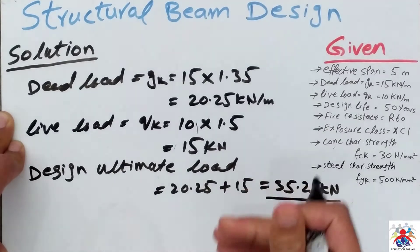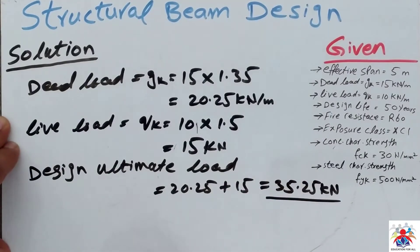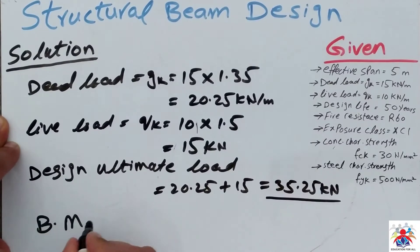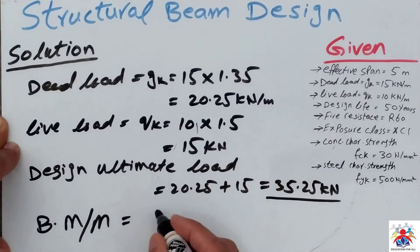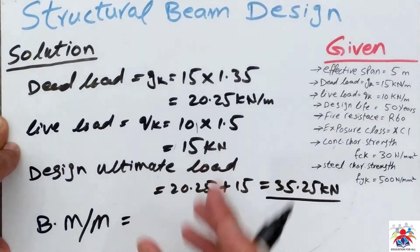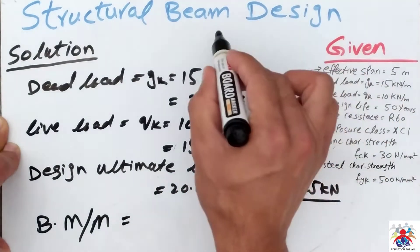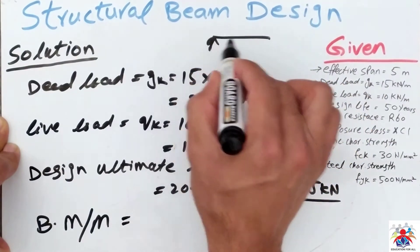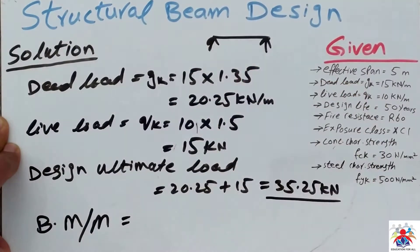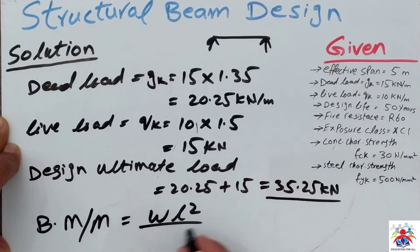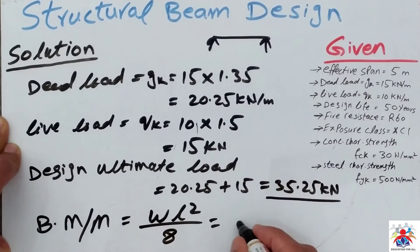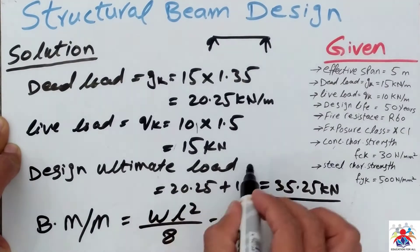After that we have to calculate bending moment, which can be expressed as BM or M. The formula for bending moment for a simply supported beam — and keep in mind we are designing a simply supported beam with only two supports — is w·L² over 8.